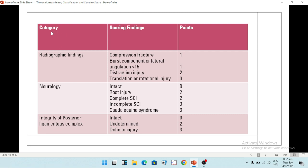This score, the thoracolumbar injury classification and severity score, is basically divided into three parts. We have to look at the radiology of the patient, the neurology of the patient, and the integrity of the posterior ligamentous complex.